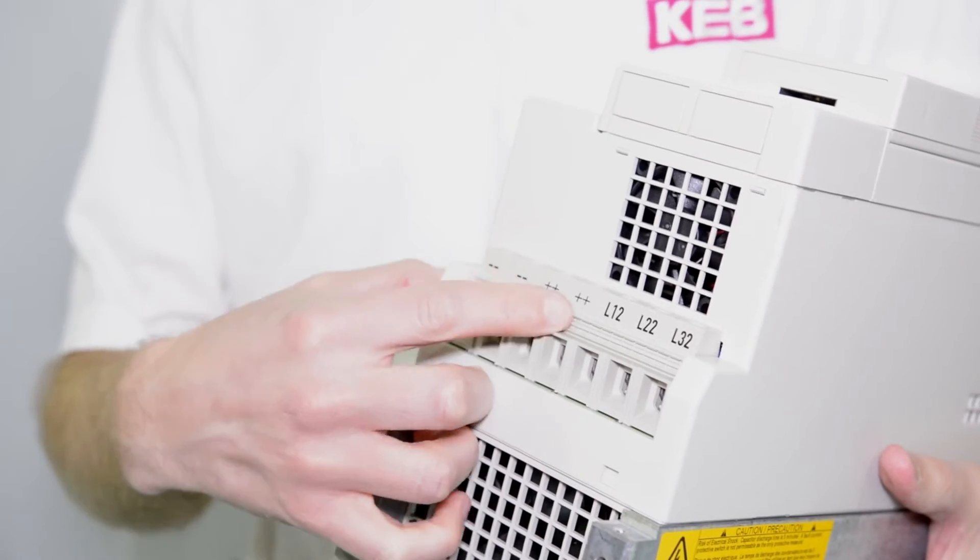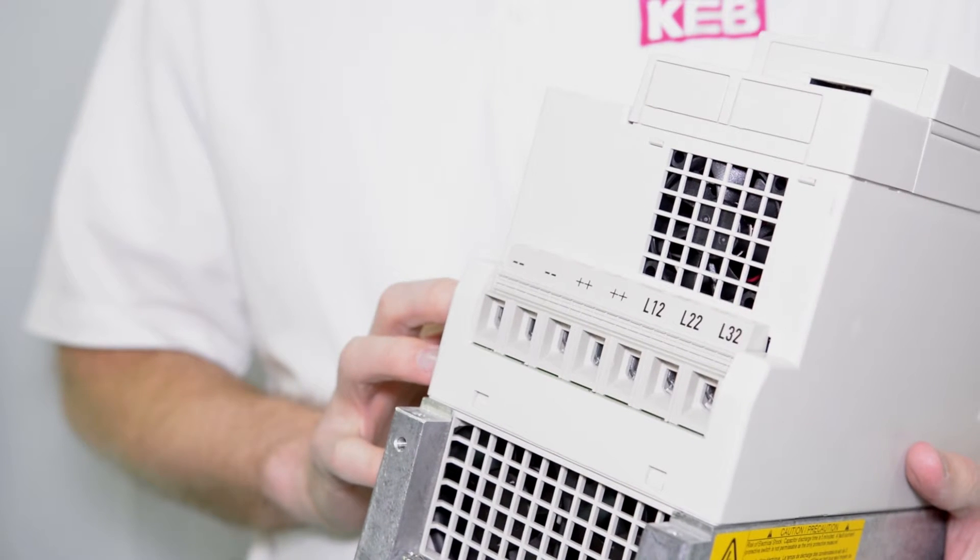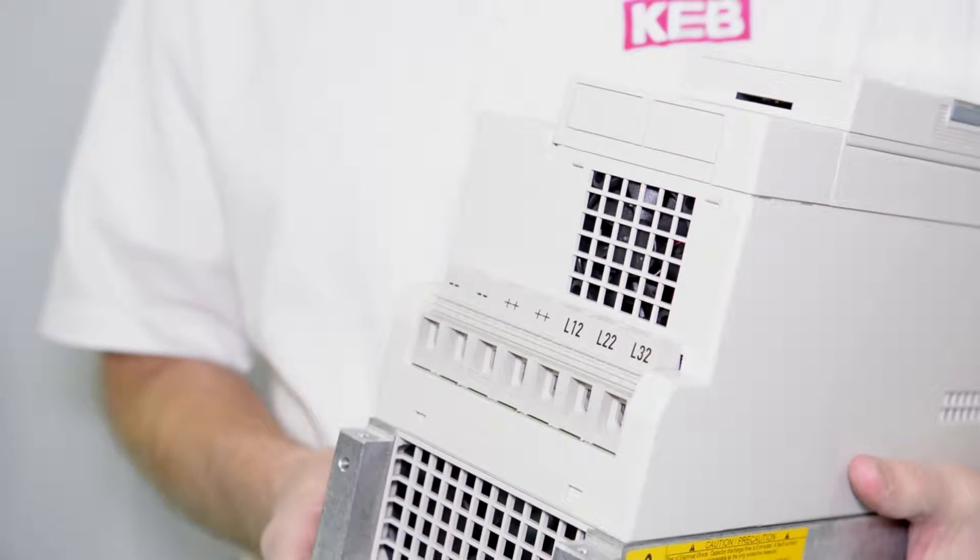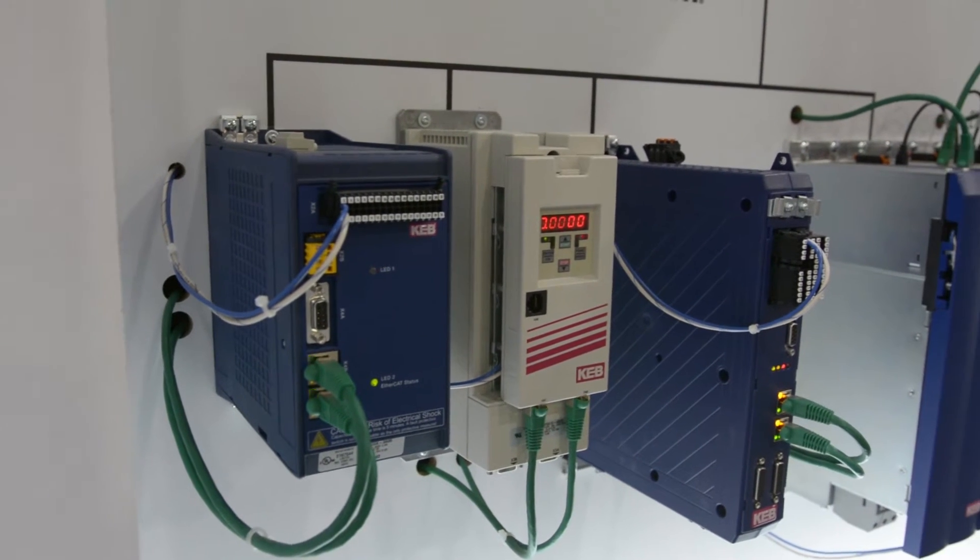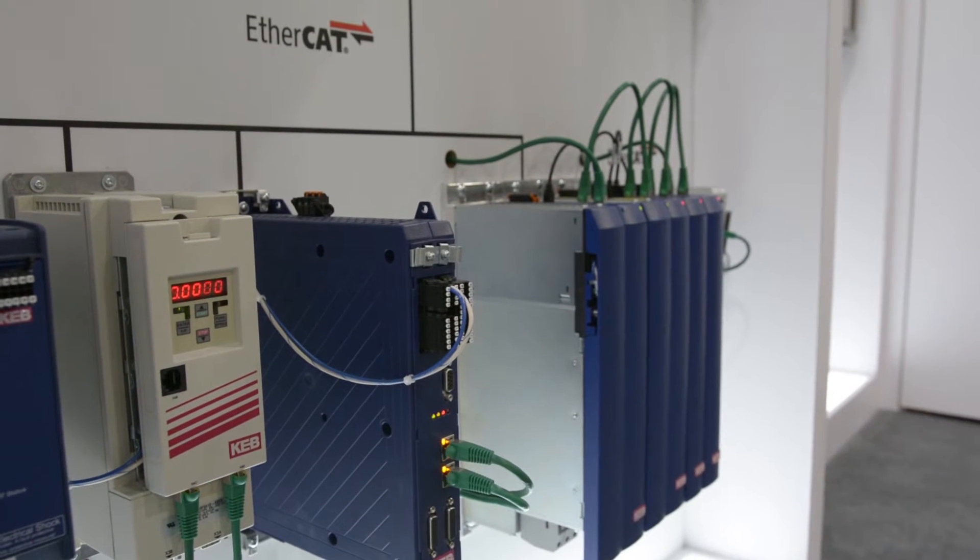You can see that there are multiple connections for the DC bus, so these units can be paralleled together if needed. This DC bus connection is where you connect the R6 Regen Unit to any VFD. It can be a KEB VFD or any third-party VFD that has the ability to bus tie.